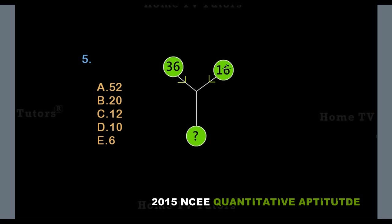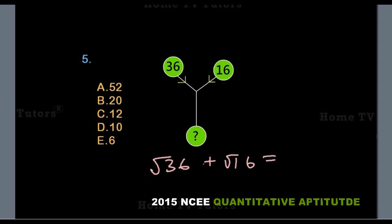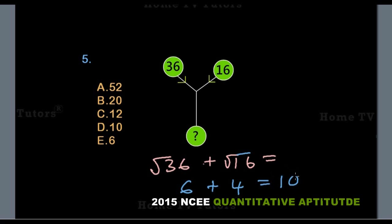Remember: the square root of the number on the left plus the square root of the number on the right is what slides down to give us the number at the bottom. So the square root of 36 plus the square root of 16: the square root of 36 is 6, and the square root of 16 is 4. So 6 plus 4 equals 10, the missing number is 10, and the answer option D is the right answer.